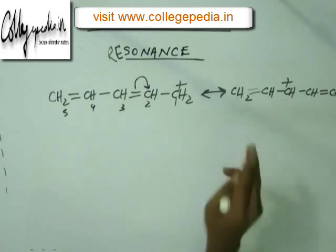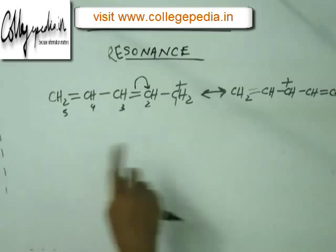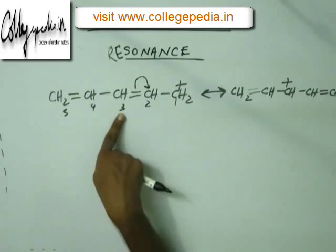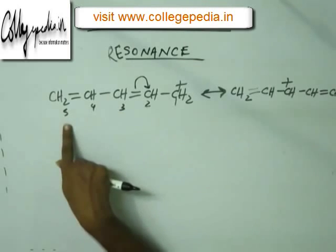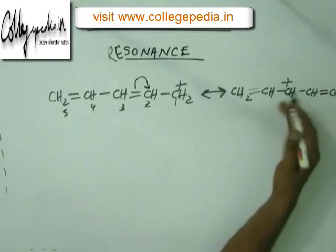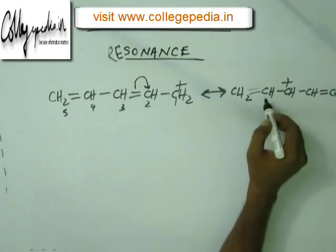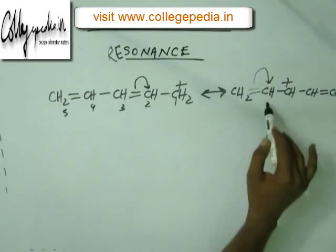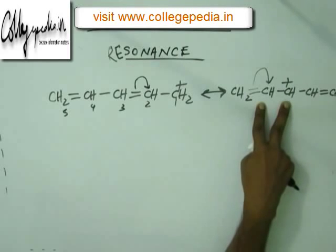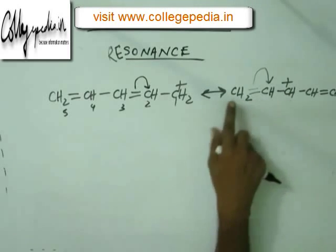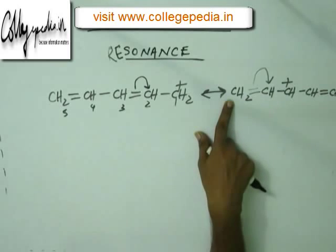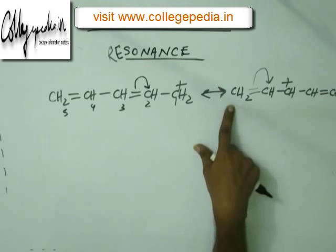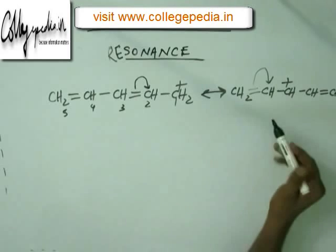We proceed in the same direction the charge has moved — from C1 to C3 — and now shift the charge from C3 to C5. To do this, we break the bond between C4 and C5, putting both electrons into C4's orbital. The plus and minus charges form a new bond at C4, and C5 develops a positive charge because its electron from the pi bond has been given to C4.